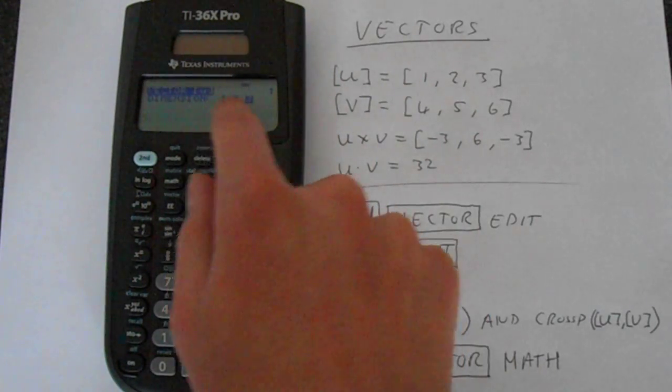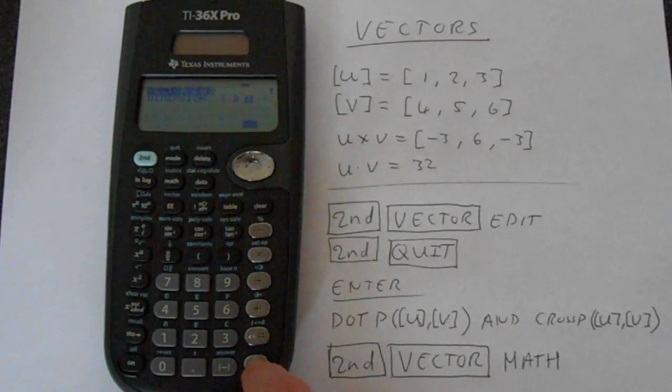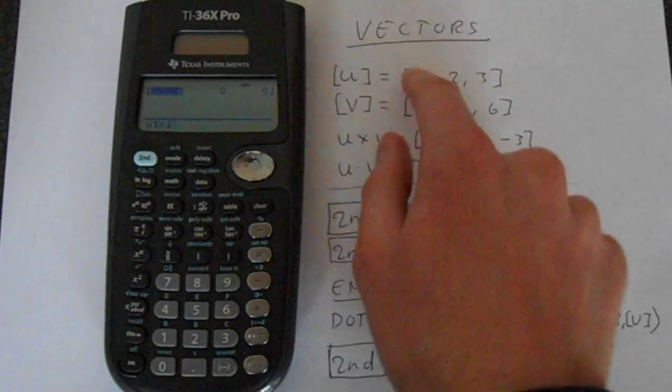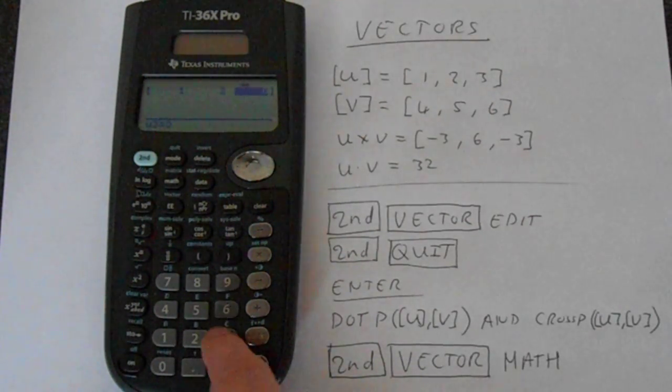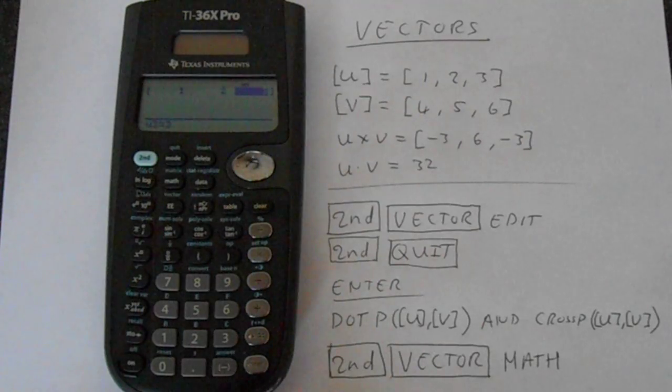You can have 1, 2, or 3 dimensional vectors. I don't know why you'd want a 1 dimensional vector, but anyway. 1, enter 2, enter 3. That's that vector entered, so we'll go second function vector again.